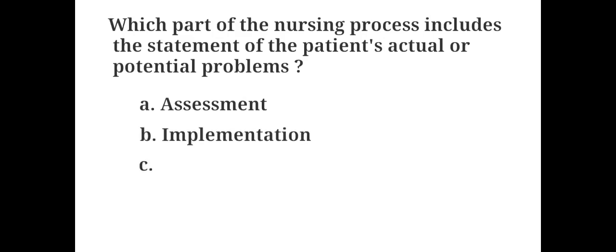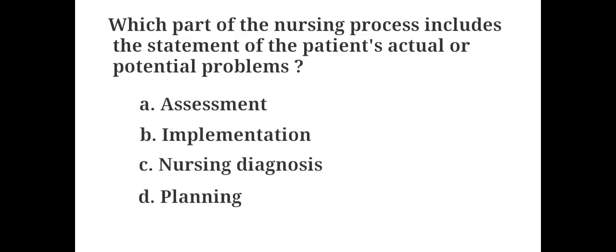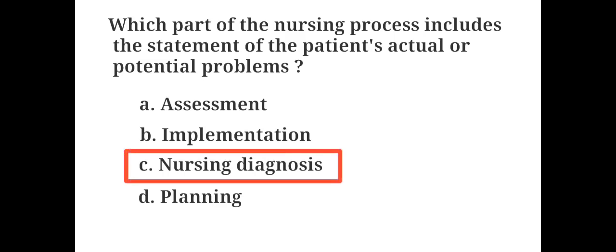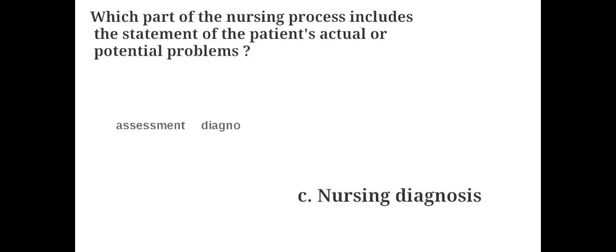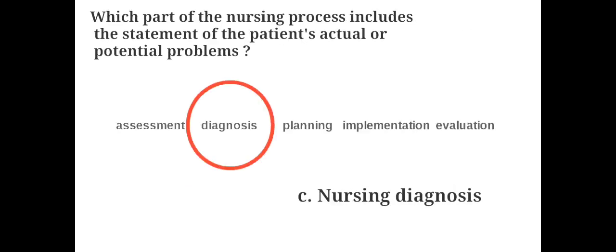Which part of the nursing process includes the statement of the patient's actual or potential problems? A. Assessment, B. Implementation, C. Nursing diagnosis, D. Planning. The answer is C. Nursing diagnosis. Nursing diagnosis is a statement which gives information about the potential problems the patient may face. It helps in planning and implementing patient care.